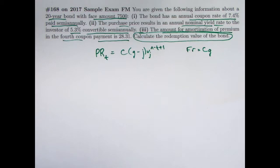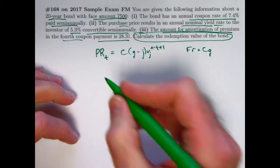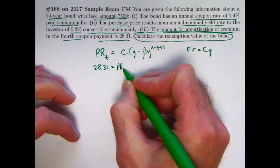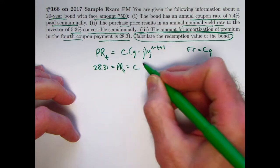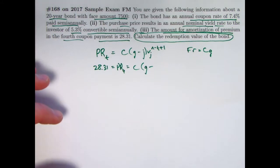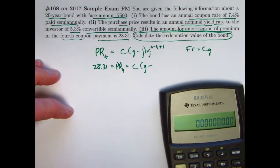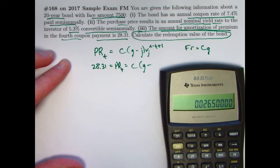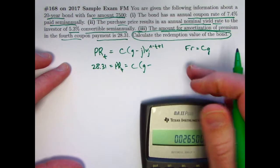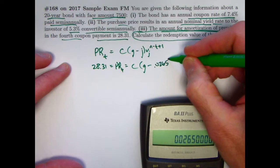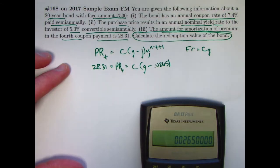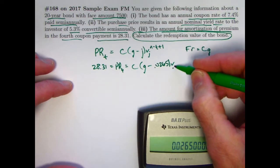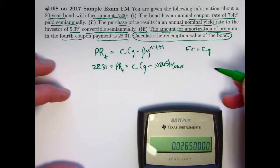So C is the redemption value. That's the thing we want to find. Little g is the modified coupon rate. Little g satisfies the condition that makes this equality true. We actually won't need to solve for little g to solve the problem, it turns out. You can use the equation pretty quickly here. 28.31 must be PR4. We can go ahead and write C times G minus J. What is J? J is going to be the effective semi-annual yield rate, 5.3% divided by 2. J is going to be 0.0265. And that will be the subscript on the V as well, 0.0265. That is the semi-annual yield rate.